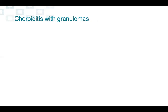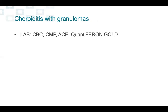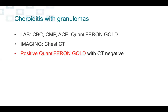Choroidal granulomas are usually present in three kinds of disease in uveitis: VKH, sarcoidosis, and tuberculosis. The patient was sent to the lab, and we got an ACE and Quantiferon Gold to check for sarcoidosis and tuberculosis, and then sent the patient to imaging to check the status of the lungs. The Quantiferon Gold came back positive and the chest CT negative, so the diagnosis was TB choroiditis with no lung involvement.